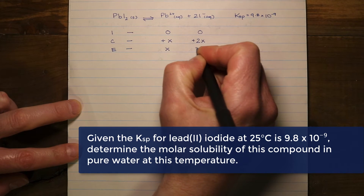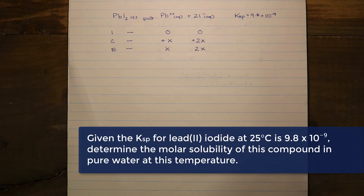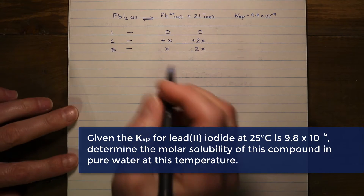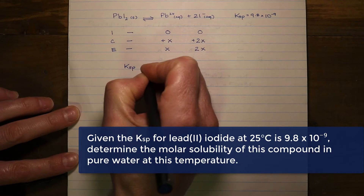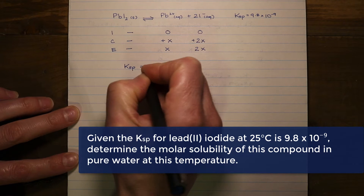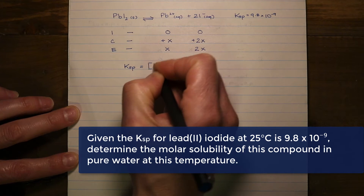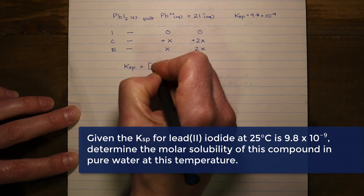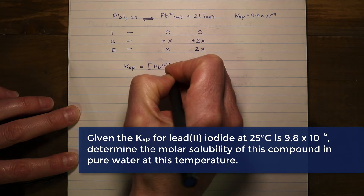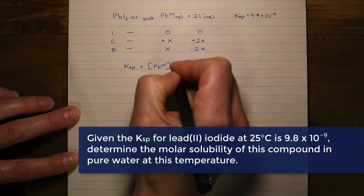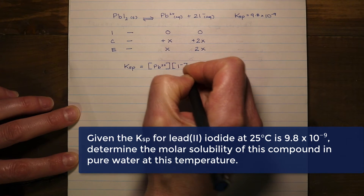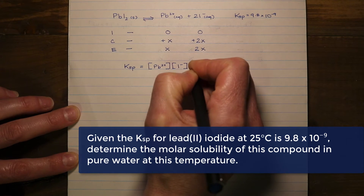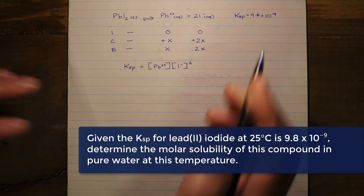Now that we've done the ICE table, we can write out our Ksp expression. It's no different from any other Ksp expression: we take the concentrations of the ions produced, raise each to the exponent matching its coefficient from the equation, and there is nothing in the denominator.